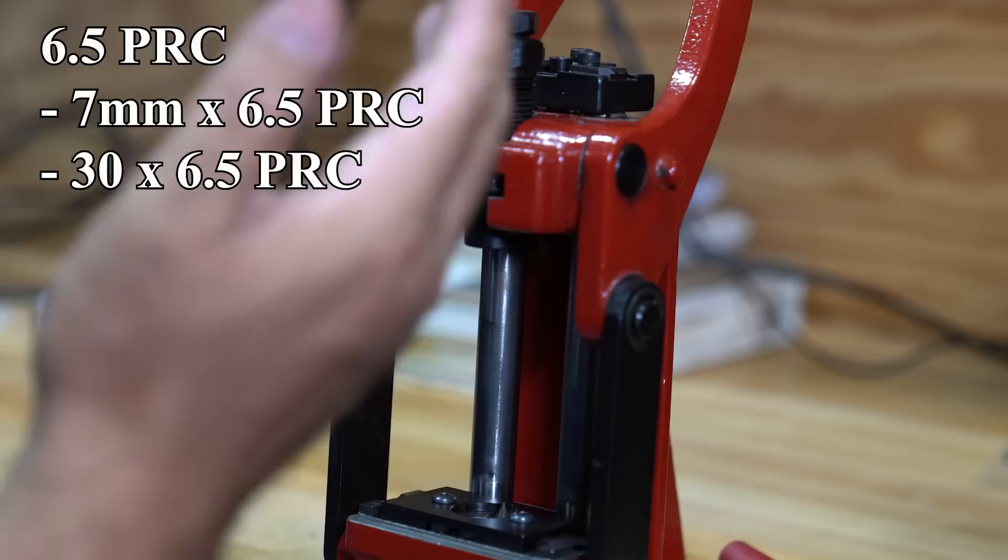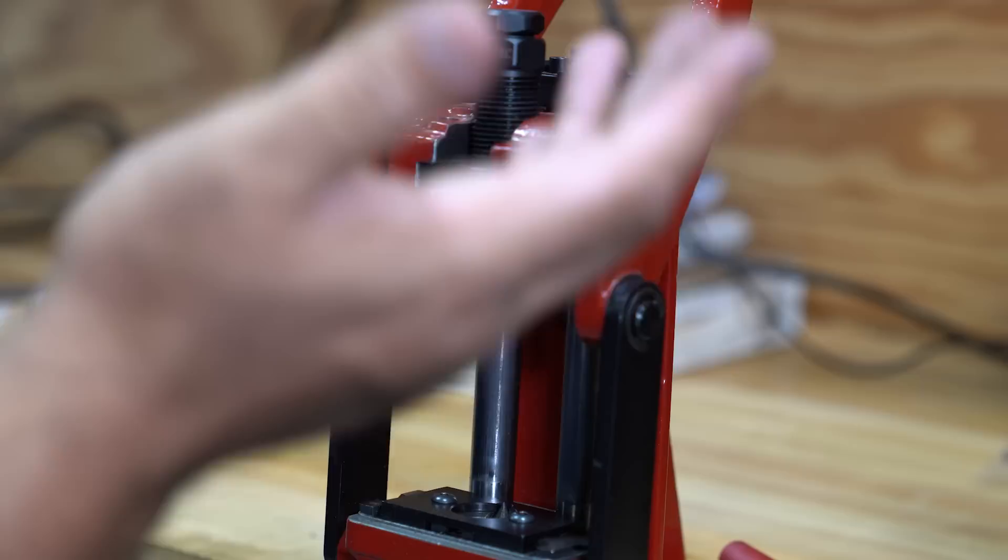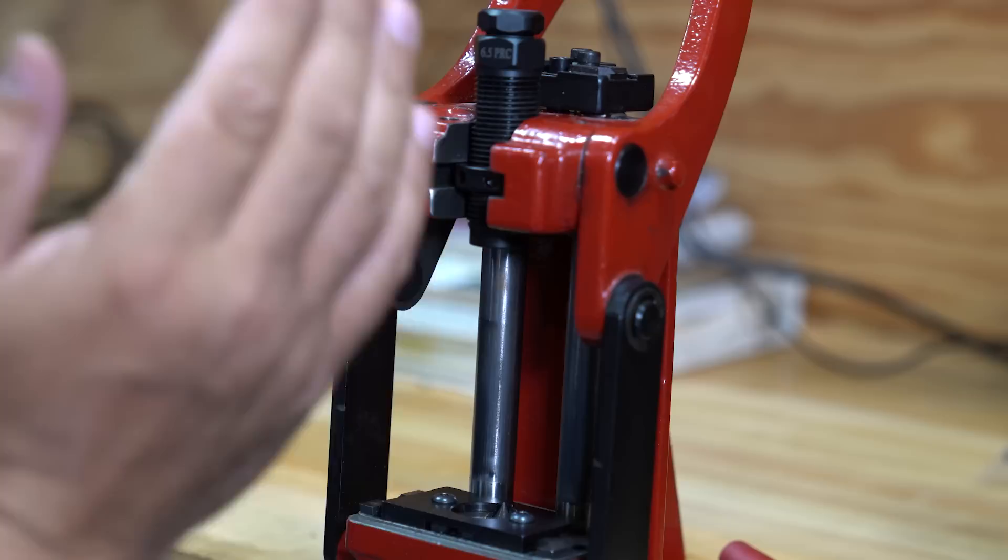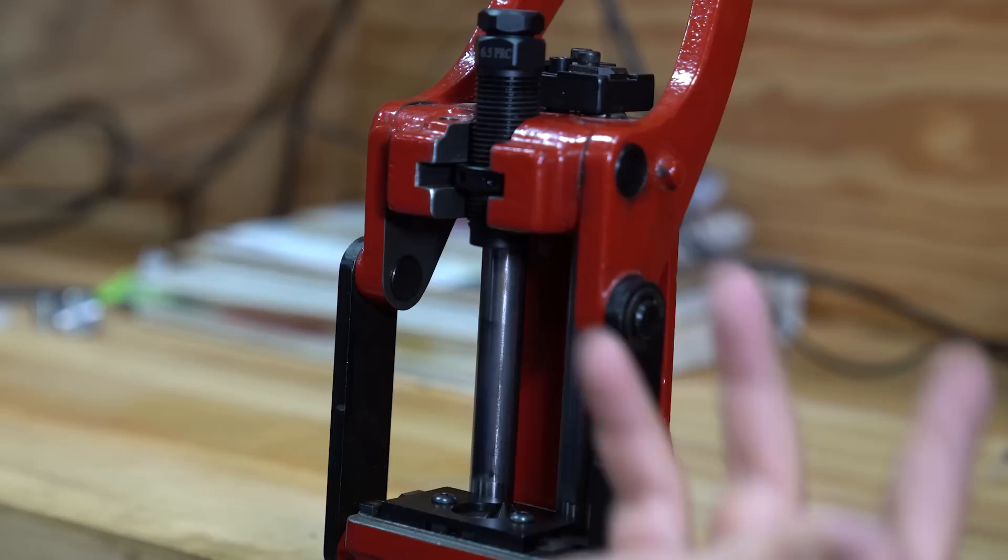Again, you can use this with a 6.5 PRC, the 6.5 or the 7x6.5 PRC. There's also a .30 caliber by 6.5 PRC. Anything that is derived from the 6.5 PRC, you can use this die on. Obviously, you just simply need to change the mandrel. We also have them for .284. The .284 Winchester, you can use with .284 Shehane, .284 Walker, KMR, anything derived from the .284.